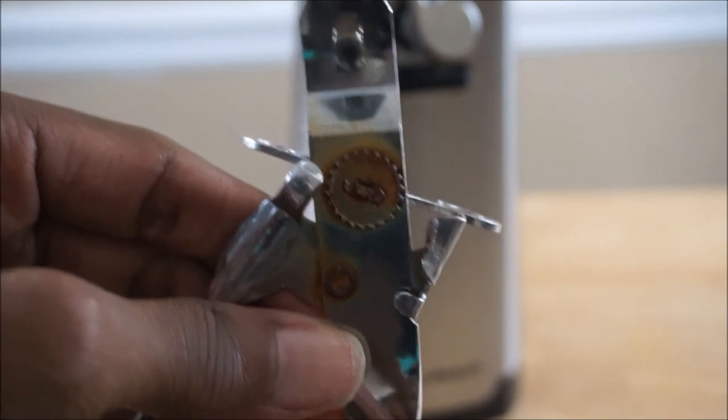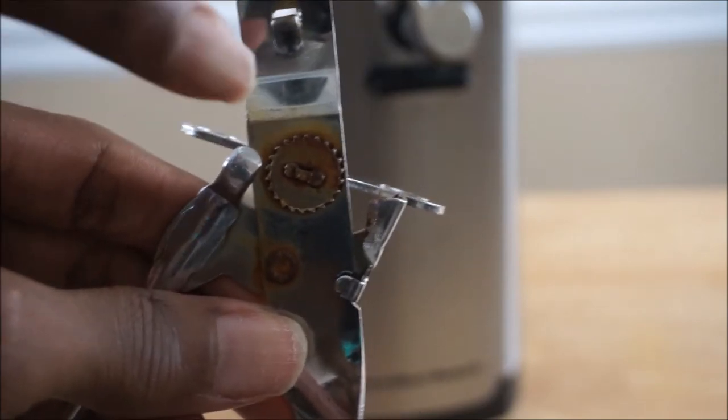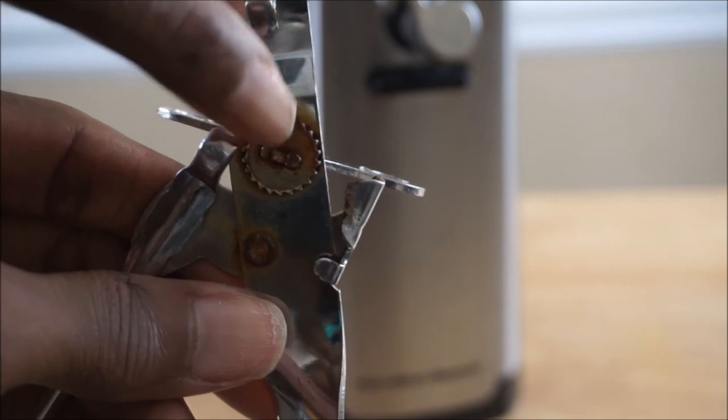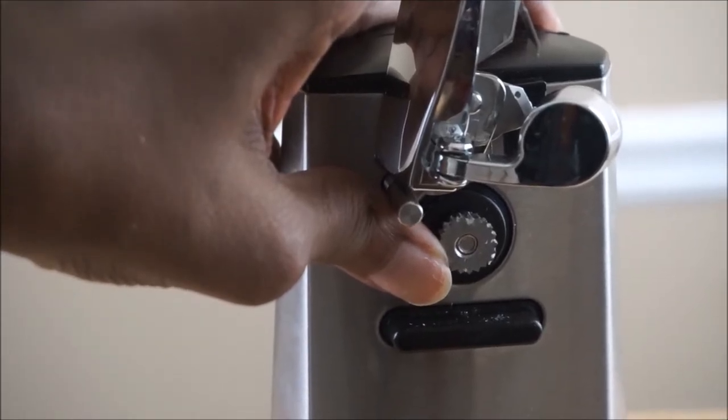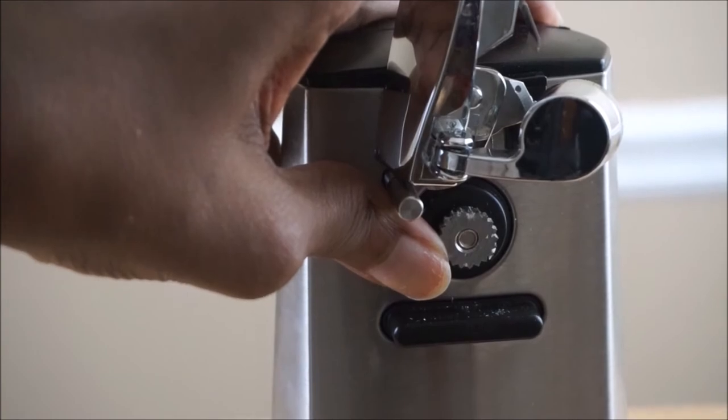The manual can opener's wheel is prone to rust faster, so it won't last you for long. Whereas the wheel on the electric can opener is not prone to rust as fast, so it will last you longer.